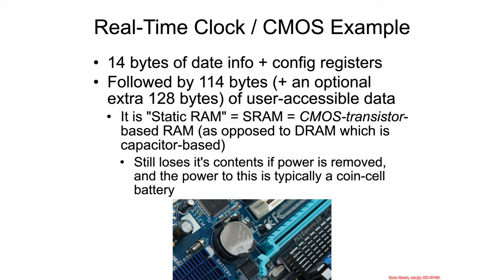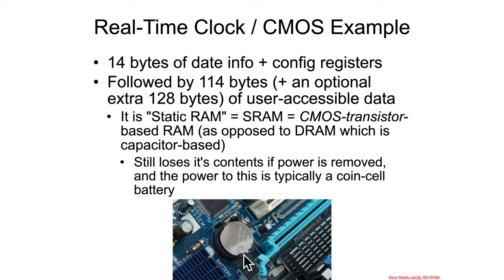Why is this called CMOS? The memory physically accessed during port IO — past the date/time information and into the arbitrary bytes — is called static RAM or SRAM. SRAM is made up of CMOS, or complementary metal-oxide semiconductor, a type of transistor. These transistors store information the same way registers in a CPU do, but lose their contents when power is removed. So CMOS is typically backed by a physical battery inside the motherboard, which ensures it retains contents and acts as non-volatile RAM — until that battery dies.